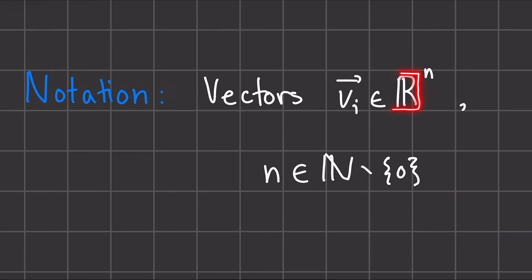And then we know this is a vector of size n because it is from our set of vectors that have entries from the real numbers and have a length n, where n is a natural number other than zero, so a positive integer in this case.